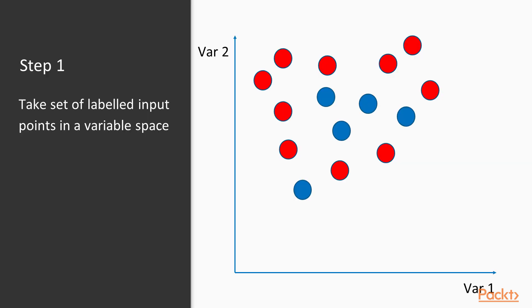In practice, this looks something like this. As we have before, we're going to look at a set of points defined by variable 1 and 2. Some of these points are labeled blue (label 1), and some are labeled red (label 2).